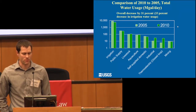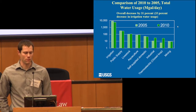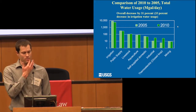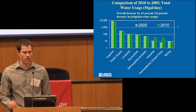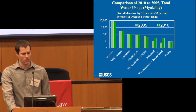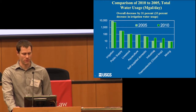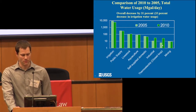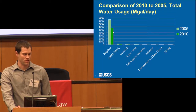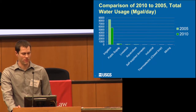This shows the changes from 2005 to 2010. We had an overall decrease of 31%, based on a 33% decrease in irrigation. Although the overall decrease was significant, there were increases in some categories — industrial and thermoelectric are the main ones. This slide shows the reduction in irrigation much more clearly on a linear scale, and it highlights how irrigation dwarfs pretty much anything else.